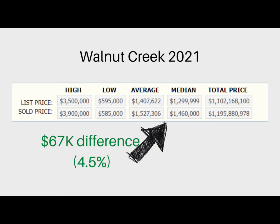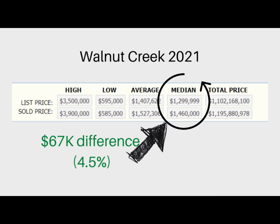I have two brief examples of how in the real world, like in my local real estate market, average and median can be kind of close together or very far apart. First off, we have Walnut Creek, California — almost 800 single-family homes sold last year. In my area, sold price can be significantly higher than the listing price. The average sold price was $1,527,306 while the median was $1,460,000.